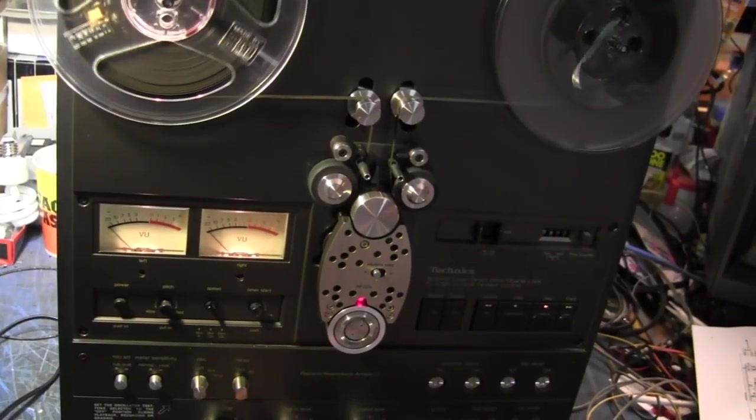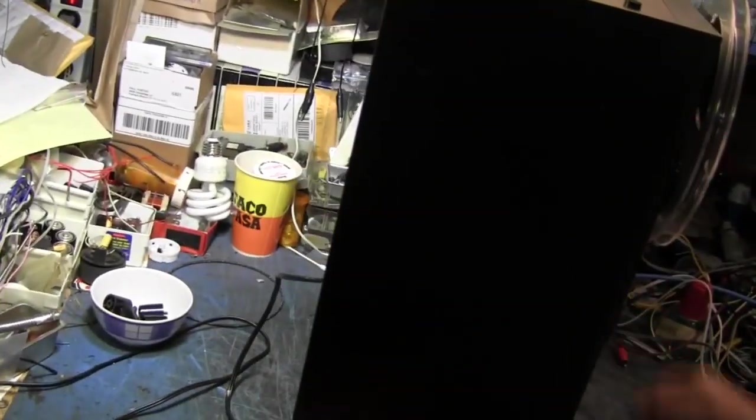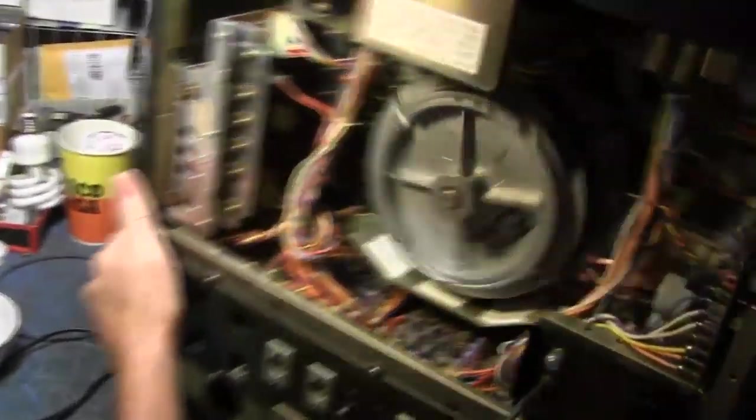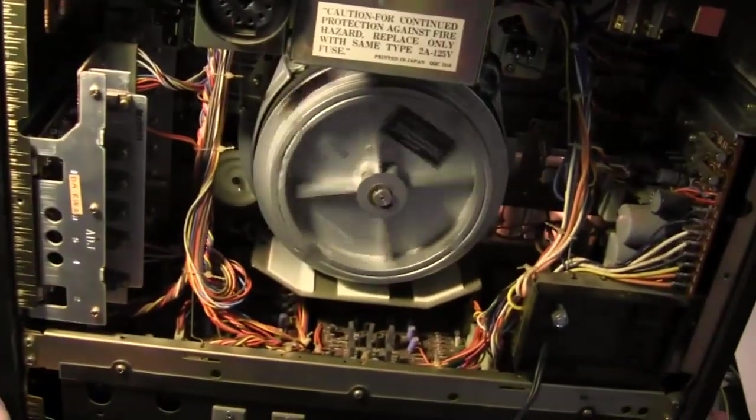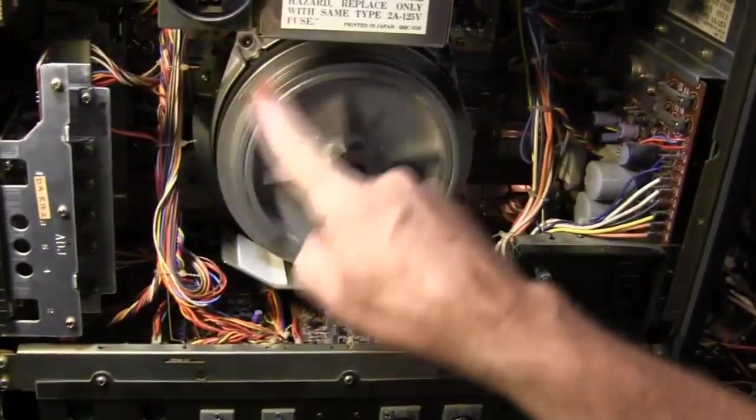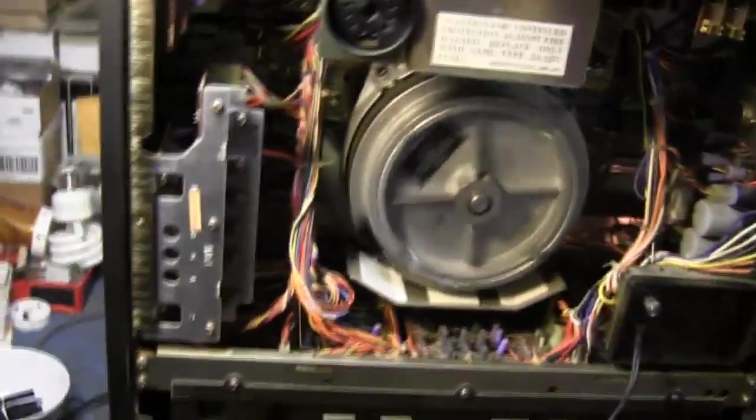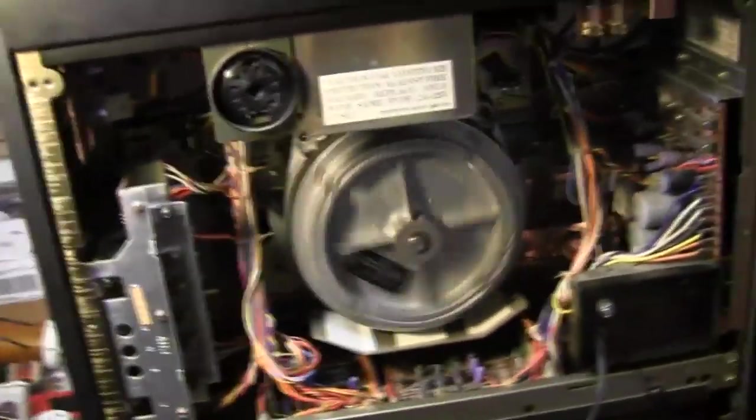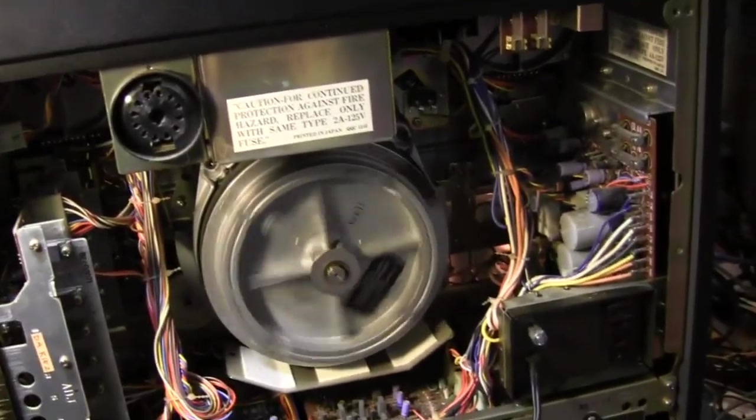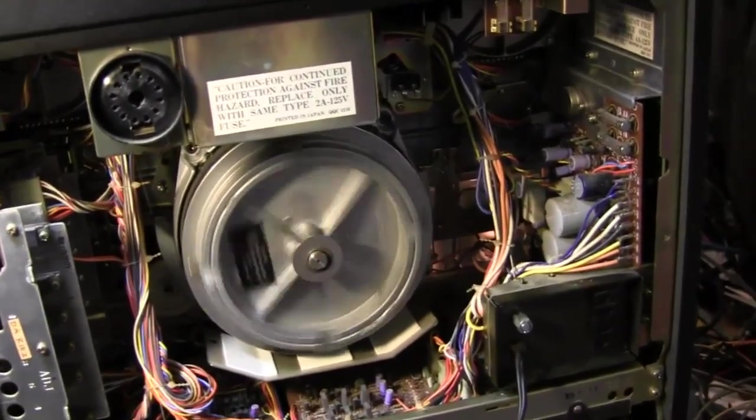One person said why don't you just put a motor in it - well that's easier said than done. Let me turn this thing around, it weighs a ton. All this old stuff weighs a ton. Look at the size of the capstan motor. The reel tables are also the same thing - brushless, three phase DC motor. So there's no belts in this to be changed, there's a belt on the tape counter but that doesn't count.